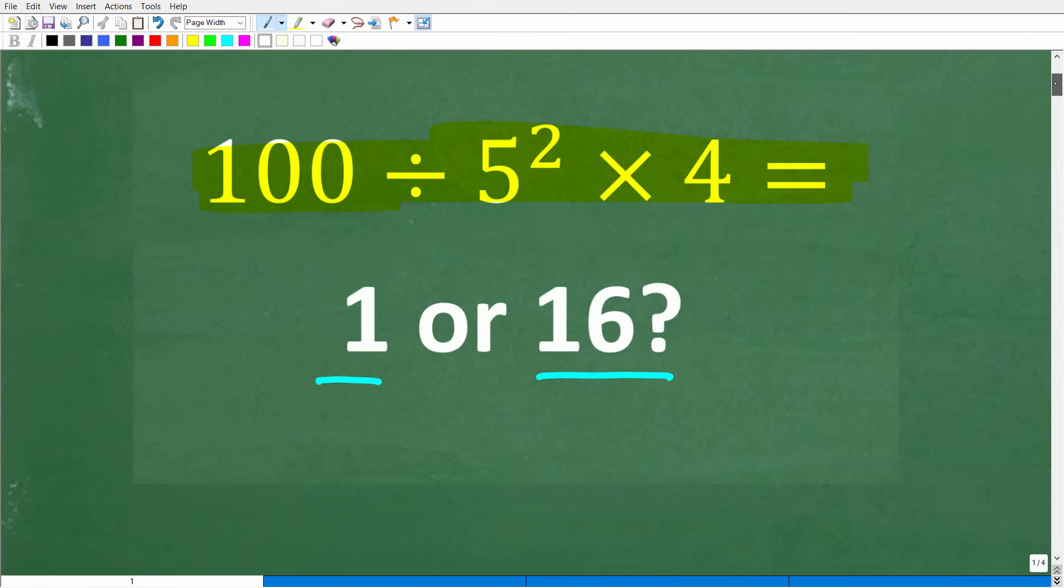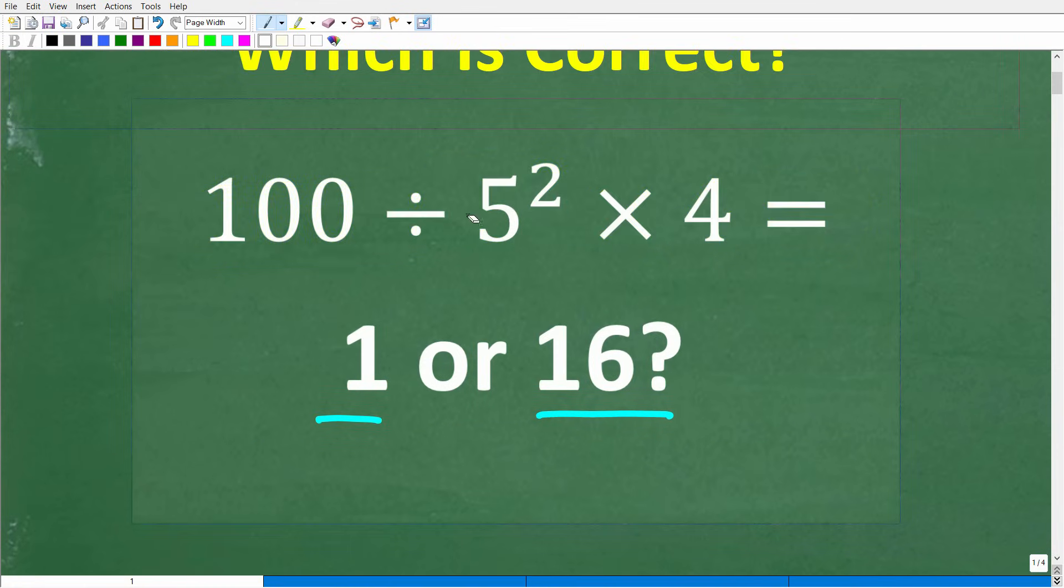Alright, so here is the problem again. 100 divided by 5 squared times 4. And we're not using our calculator. Seems like a pretty easy problem. And let's go ahead and take a look at that answer.